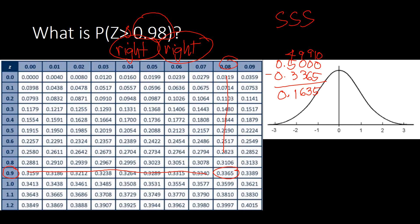So the area is 0.1635, or 16.35%. Illustrating this: z = 0.98 is marked here, the shading is towards the right side, and this area is equivalent to 16.35%.